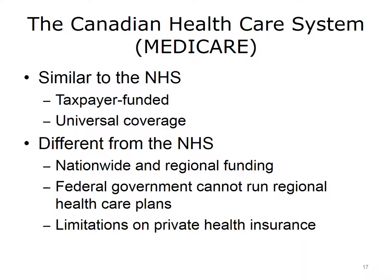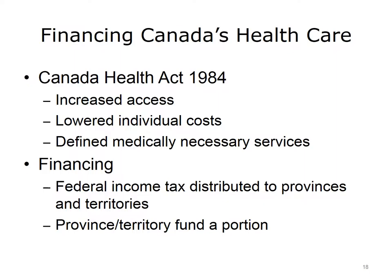Like the United Kingdom, Canada provides taxpayer-funded universal health care coverage for its citizens and permanent residents. Canada's National Health Insurance Program is often referred to as Medicare. But unlike the United Kingdom, the Canadian Constitution states that the federal government cannot run regional health care plans. As a result, each of Canada's 10 provinces and 3 territories runs its own health care plan. Funding for these multiple, single-payer plans comes primarily from the federal government, but regional governments also contribute to the costs. The modern health care system in Canada began in April of 1984 with the passage of the Canada Health Act, which updated earlier laws from 1957 and 1966 that had helped fund health care in Canada.